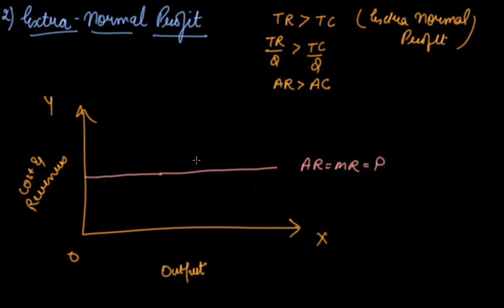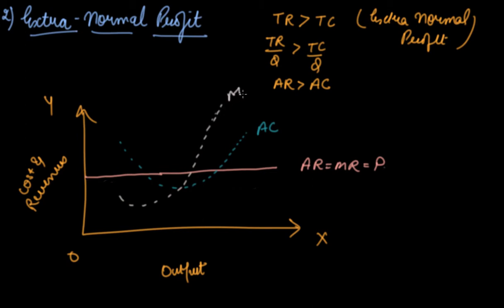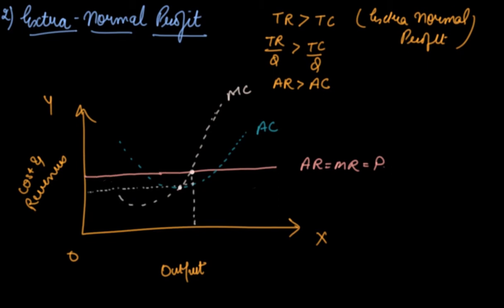When your AR is more than your average cost, the AC curve lies below the AR curve. We then draw the marginal cost curve. The AC curve is drawn at its lowest point. The producer is at equilibrium when MR equals MC and MC cuts MR from below. This gives us the point of equilibrium.